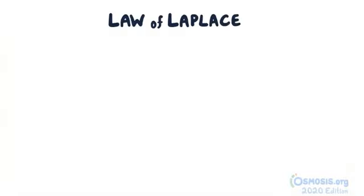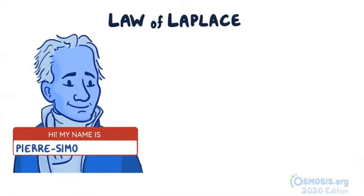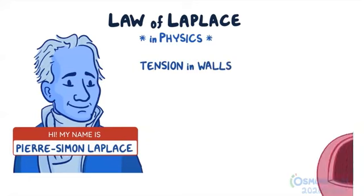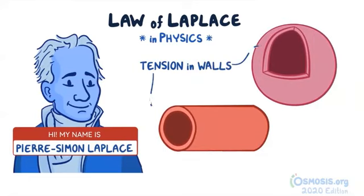The Law of Laplace, named in honor of French scholar Pierre-Simon Laplace, is a law in physics that states that the tension in the walls of a hollow sphere or cylinder is dependent on the pressure of its contents and its radius.